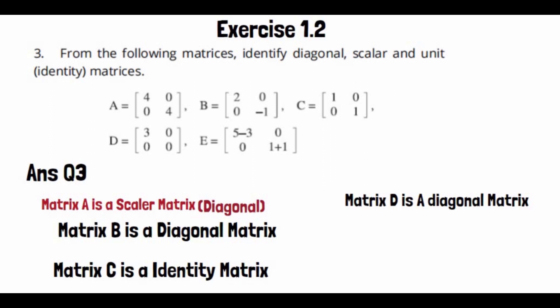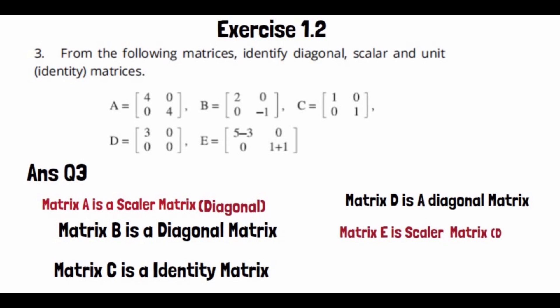Matrix E is a scalar matrix, and since a scalar matrix is always a diagonal matrix, matrix E is also classified as a diagonal matrix.